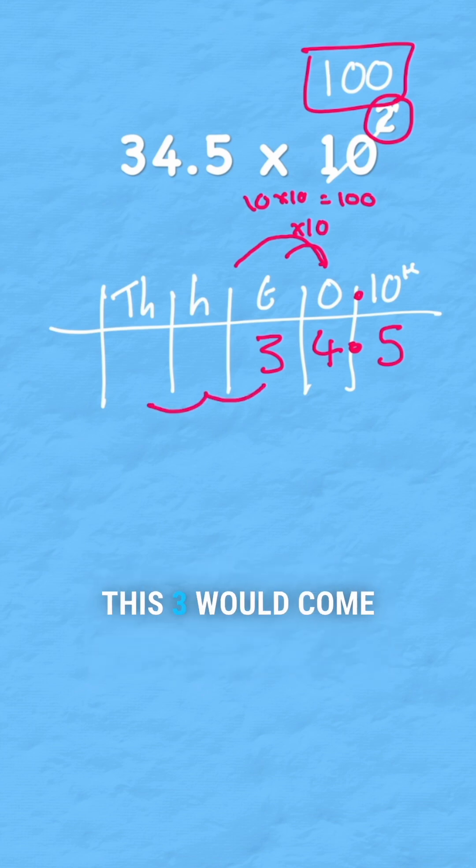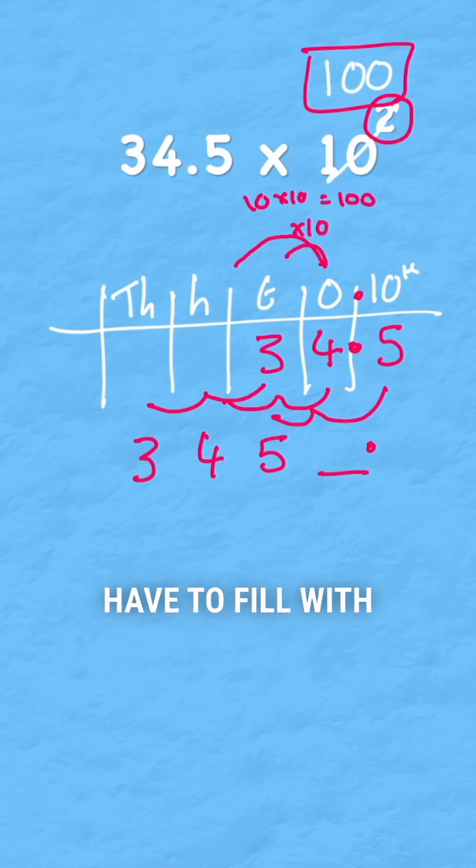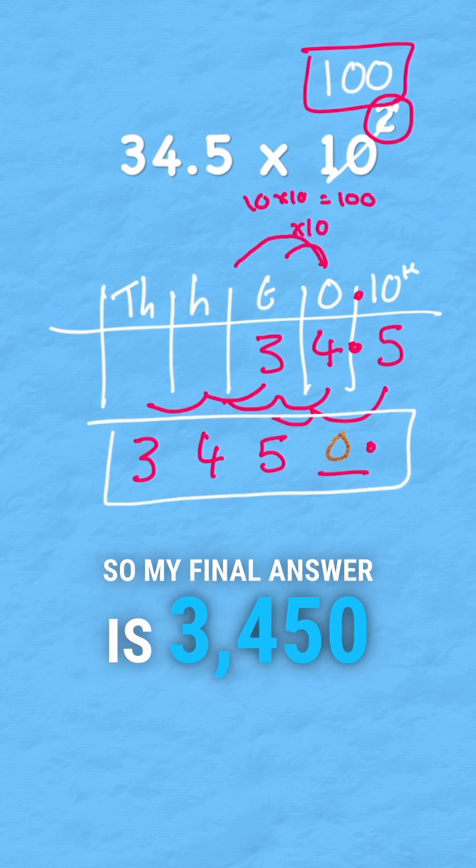So if I move two columns, this 3 would come into the thousands, the 4 would come into the hundreds, the 5 would come into the tens, and then I've got this gap before my decimal which I would have to fill with a placeholder. So my final answer is 3450. Easy, easy!